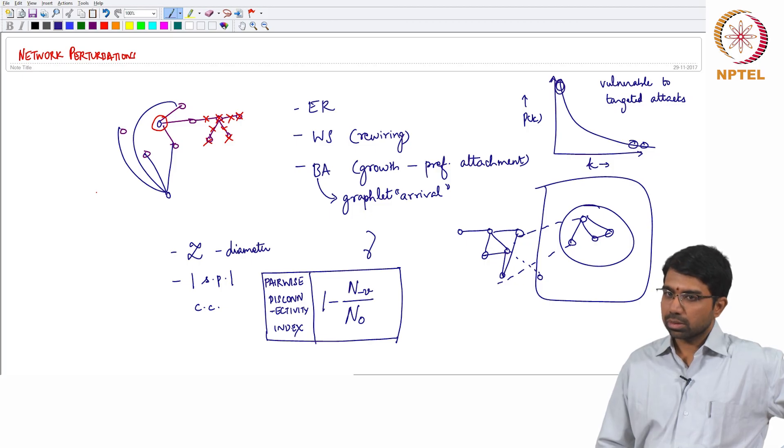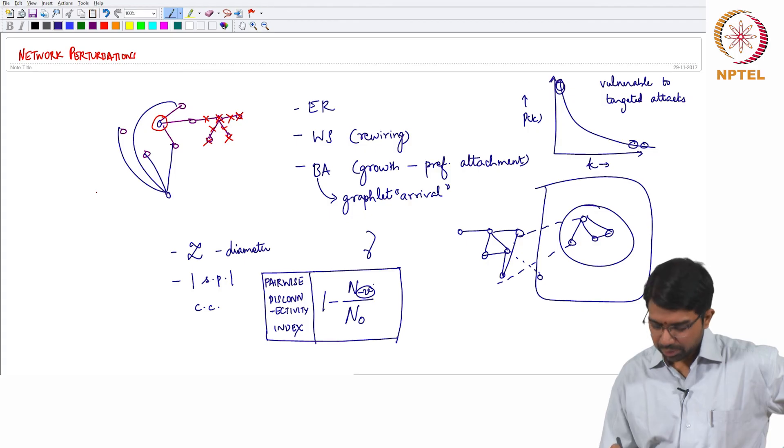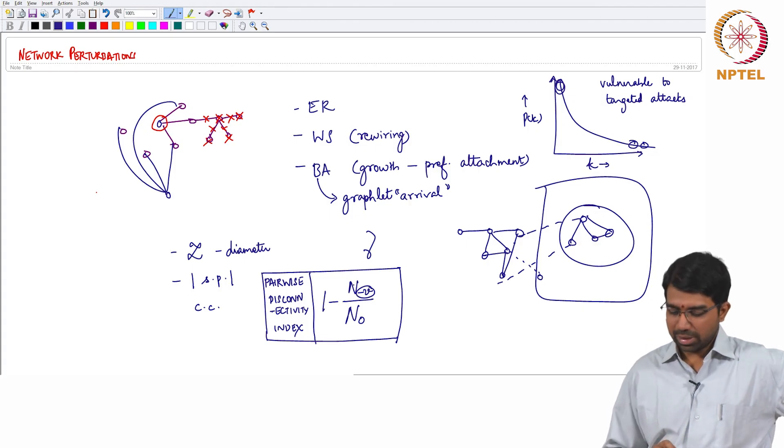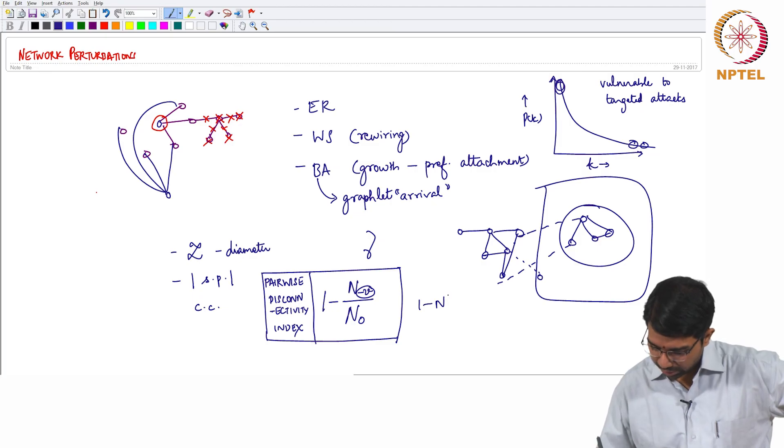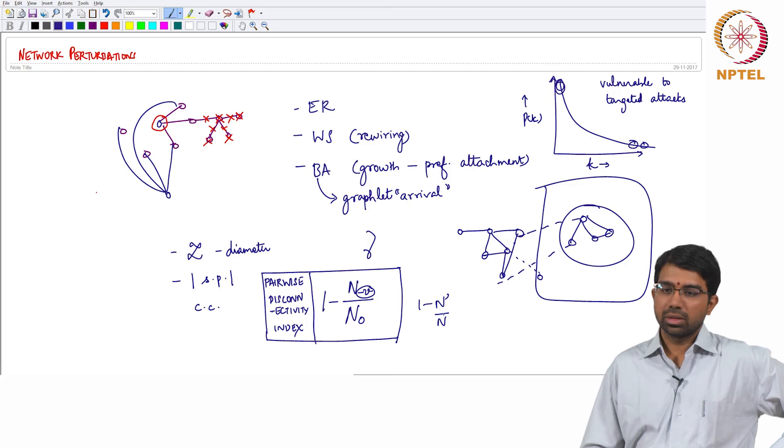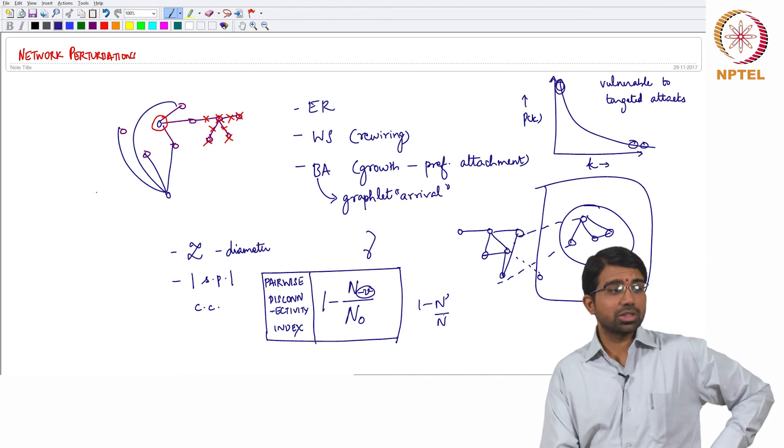So what if, how is the metric change for multiple removal? So whatever, you can just have some N or let's just say 1 minus N dash by N. N is the number of shortest paths in the network.